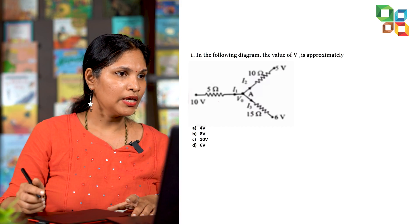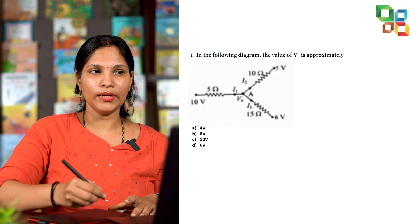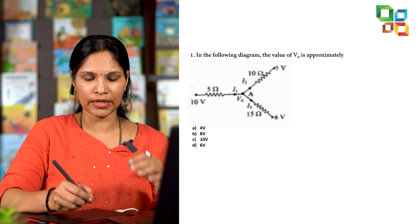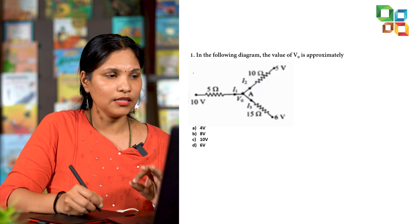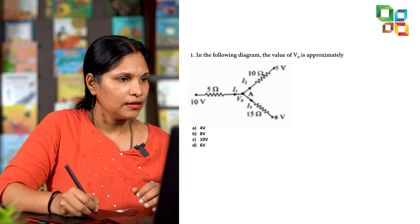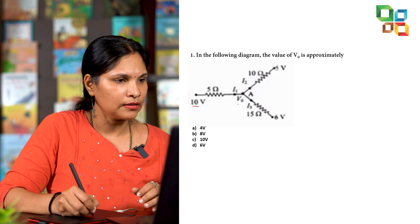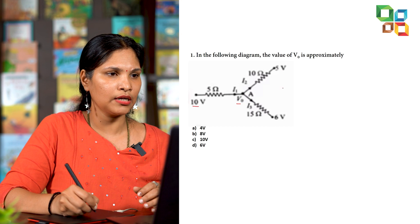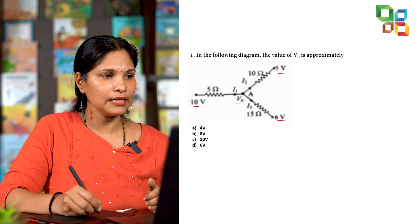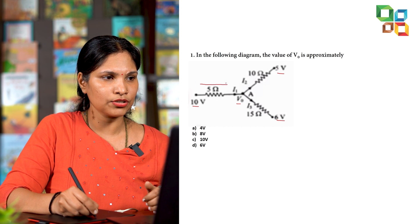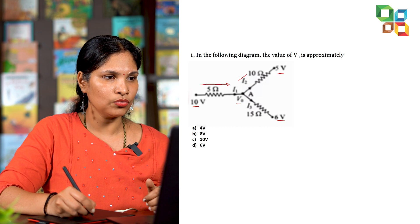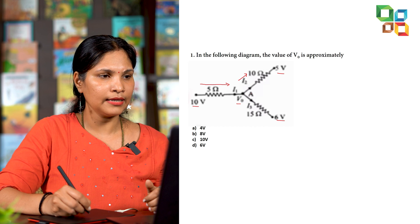The first example: in the following diagram, the value of V-naught is approximately. Let's see how we can solve this. The classical method — you can observe that there is 10 volts here, this is V-naught which we are supposed to find out, this is 5 volts, and this is 6 volts. The current is flowing in this direction as I1, and it splits into two as I2 and I3.